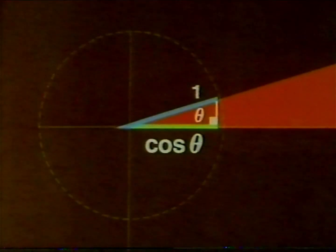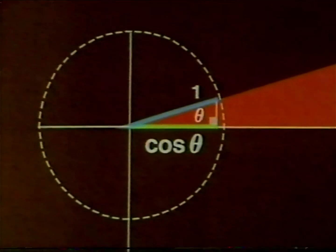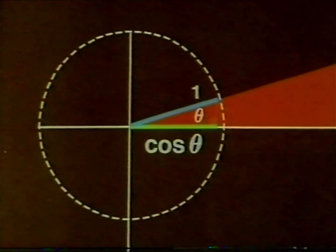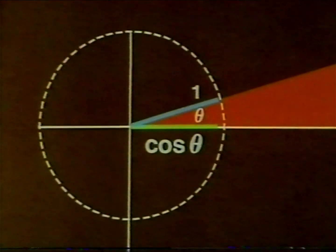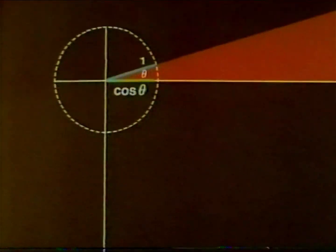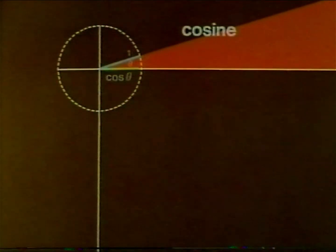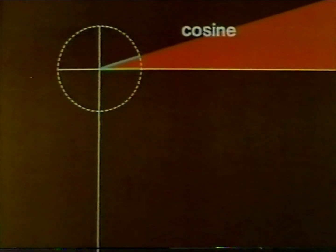When the length of the hypotenuse is one, the side adjacent to the angle, or the central displacement along the initial line, is the cosine of the angle. Let's collect some cosine lengths.